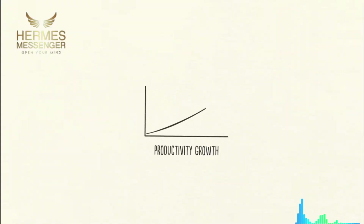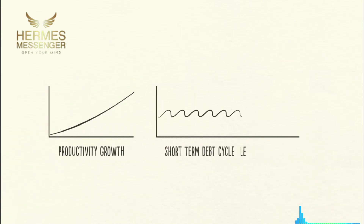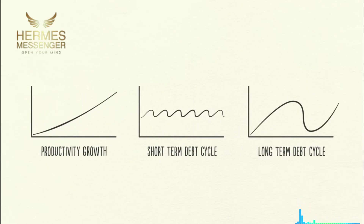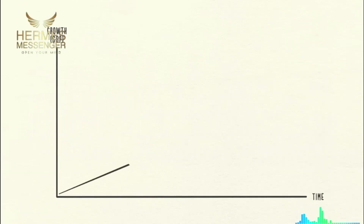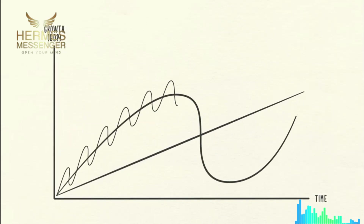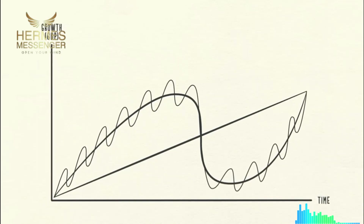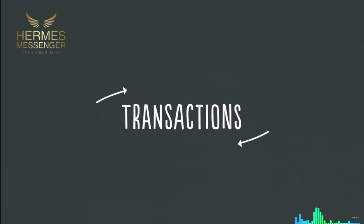Number one, productivity growth. Number two, the short-term debt cycle. And number three, the long-term debt cycle. We'll look at these three forces and how laying them on top of each other creates a good template for tracking economic movements and figuring out what's happening now. Let's start with the simplest part of the economy: transactions.